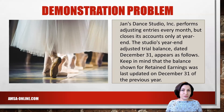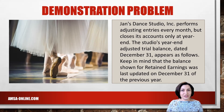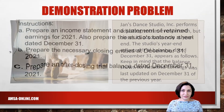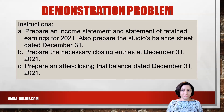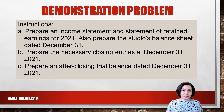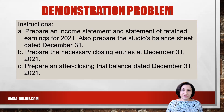Jen's Dance Studio performs adjusting entries every month but closes its accounts only at year-end. The studio's year-end adjusted trial balance dated December 31st appears as follows. Keep in mind that the balance shown for retained earnings was last updated on December 31st of the previous year. We will need to prepare an income statement and statement of retained earnings for the year, the studio's balance sheet dated December 31st, the necessary closing entries at December 31st, and an after-closing trial balance dated December 31st.